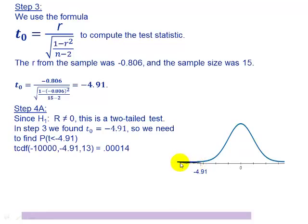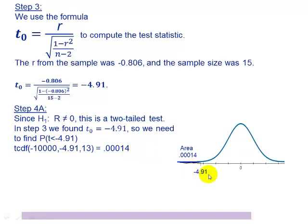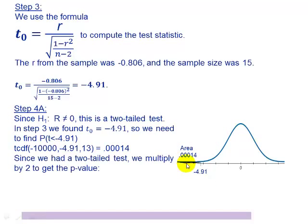To find this area, we use tcdf on the calculator. Since we're doing the left tail, we start at a large negative value — negative 10,000 — go up to our test statistic of negative 4.91, with 13 degrees of freedom. That gives us 0.00014, which is the area under that tail of the curve. Since we have a two-tailed test, we multiply by two to get our p-value of 0.00028.